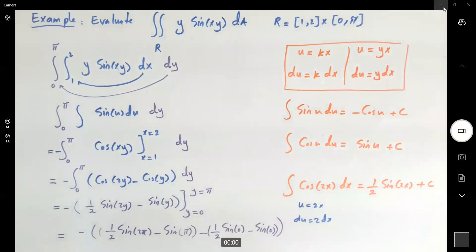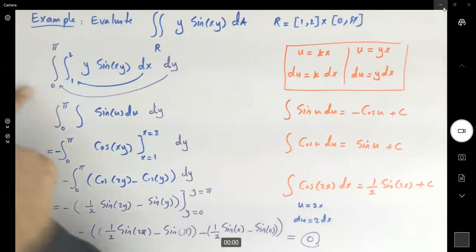Okay, as you can see, you have just 0 and 0, and the outcome is equal to 0. So this double integral is equal to 0.